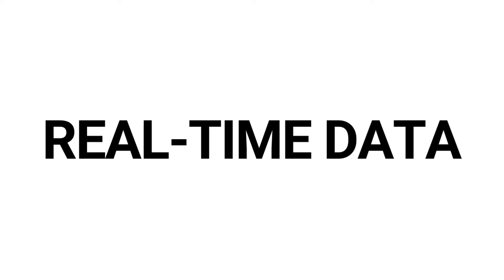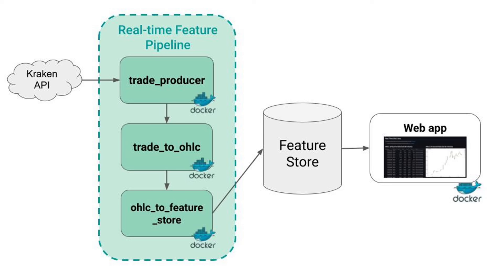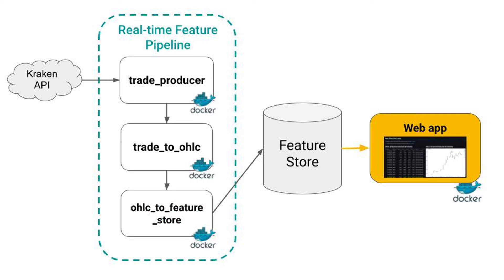This web app is not plotting a static dataset but live data generated by a real-time feature pipeline. This real-time feature pipeline is ingesting raw data from Kraken, transforming it into open high low close candles, and then storing it in a serverless feature store. From there our dashboard is fetching the data. Let's get to it — these are the four steps to build this production ready dashboard.